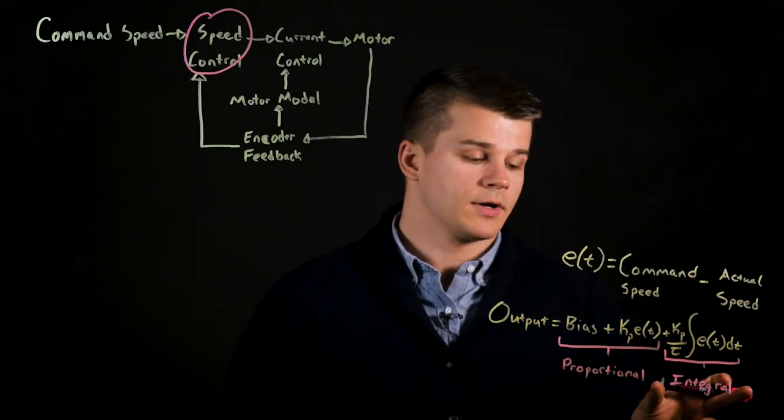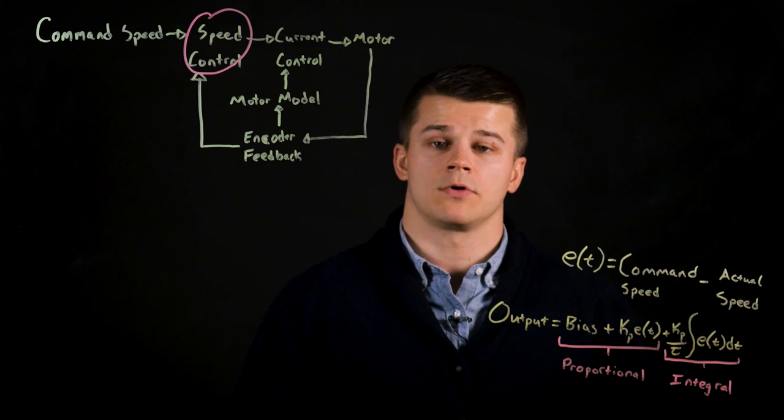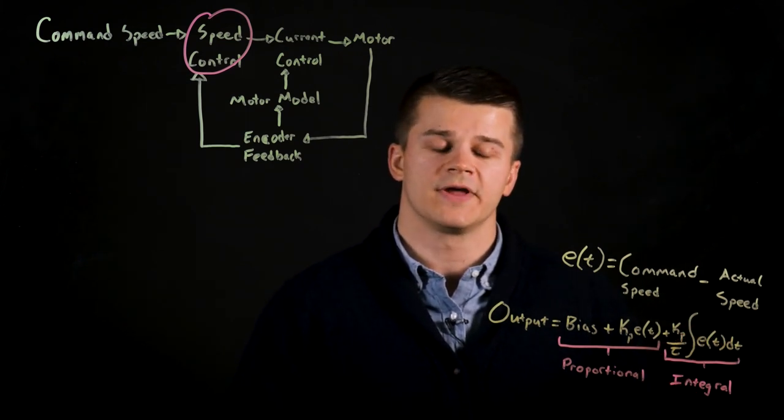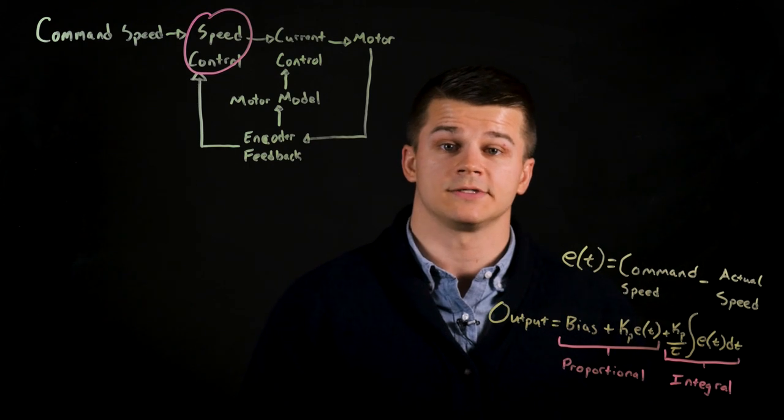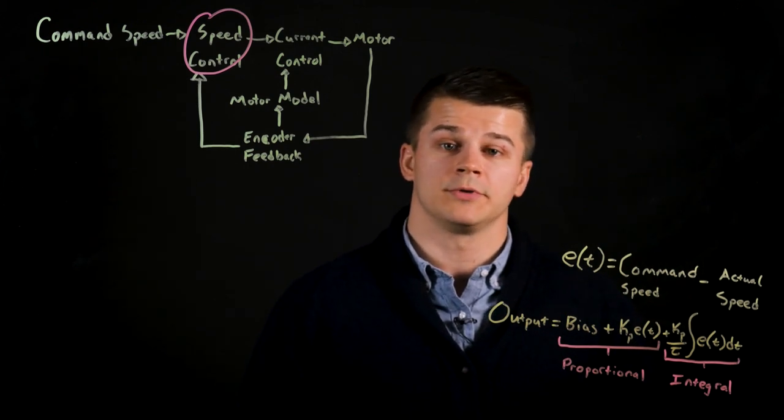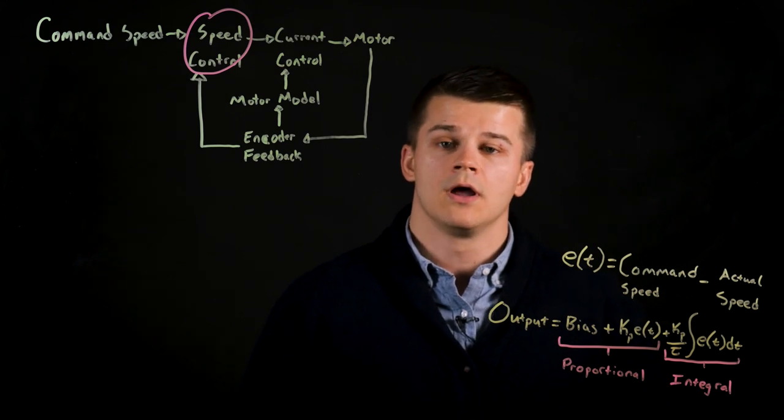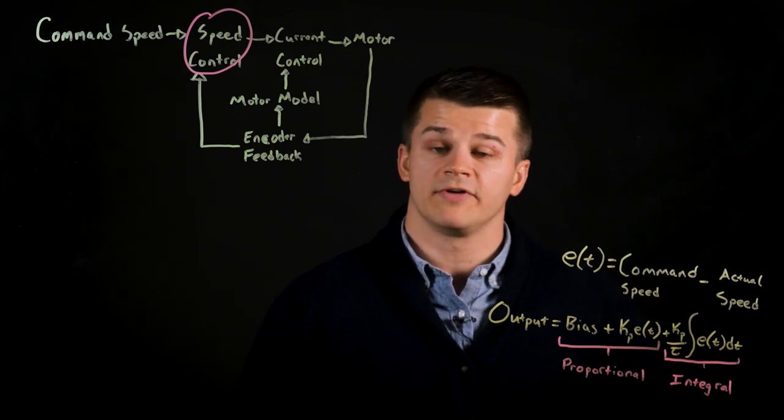Now we'll look at the slightly more complex integral portion of the control algorithm. This still starts with your proportional control gain but then it's divided by your integral time constant. This value is also programmable in the drive and it's important to note that because you're dividing by that term, a smaller value will have a harder effect on the control.